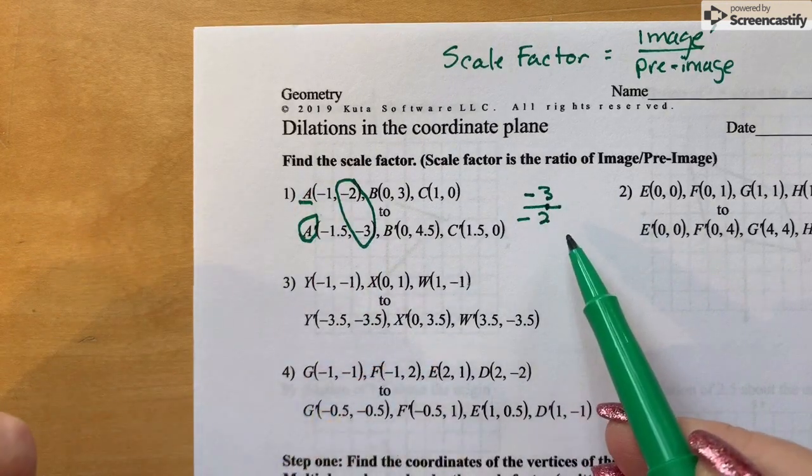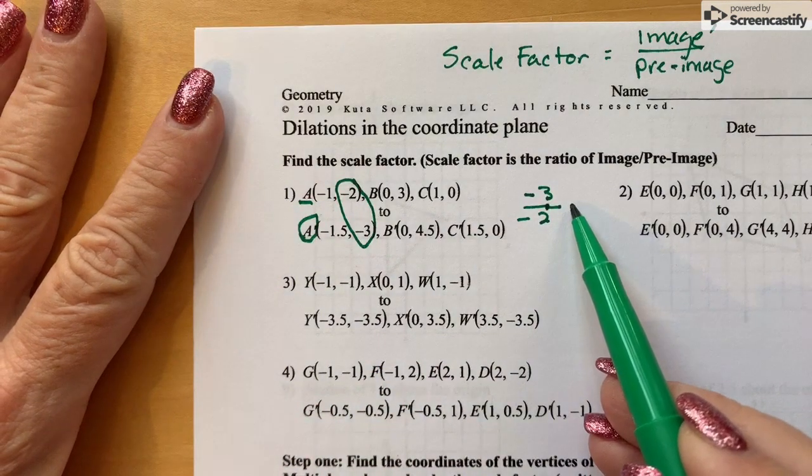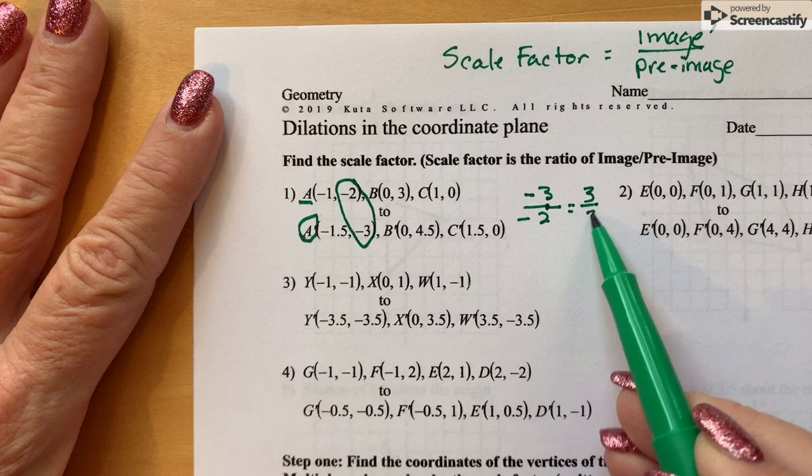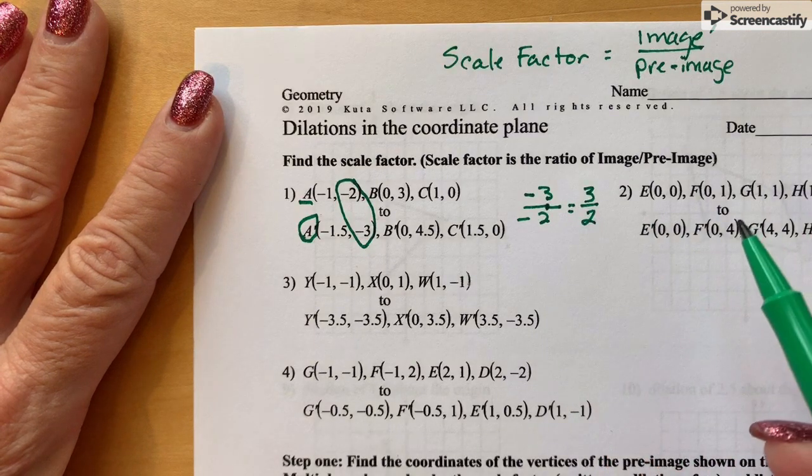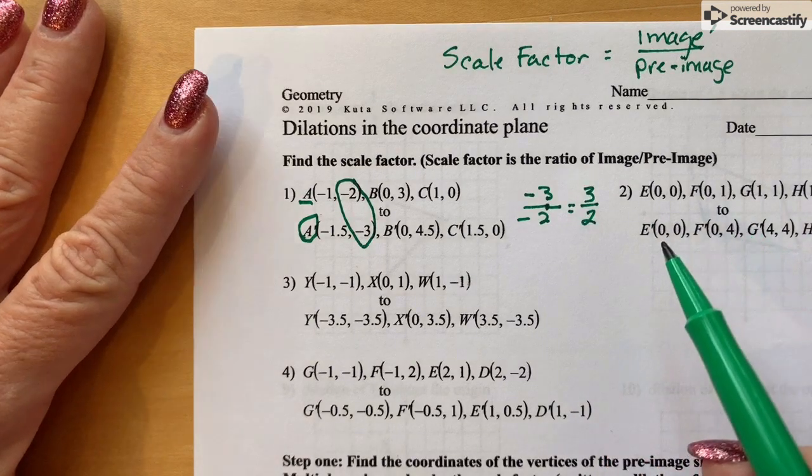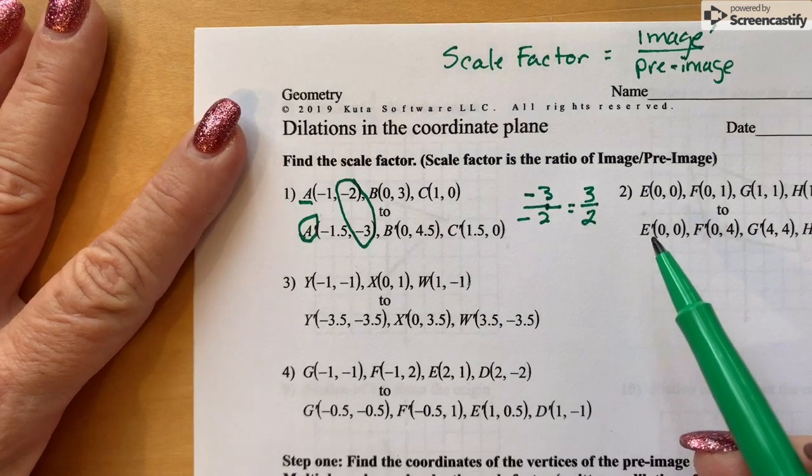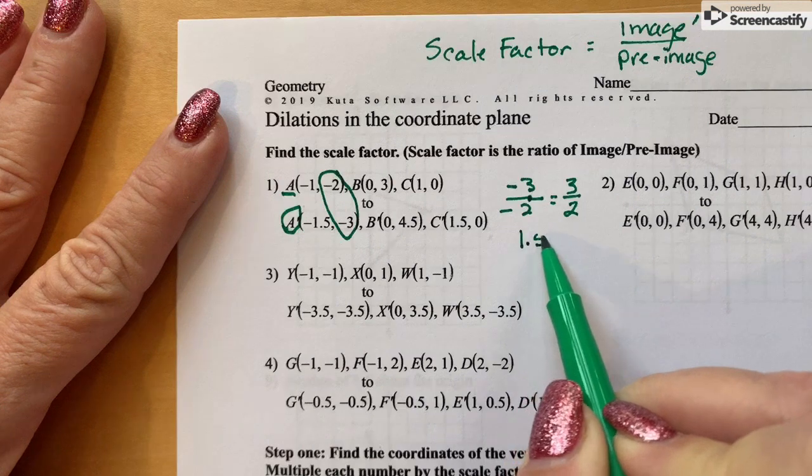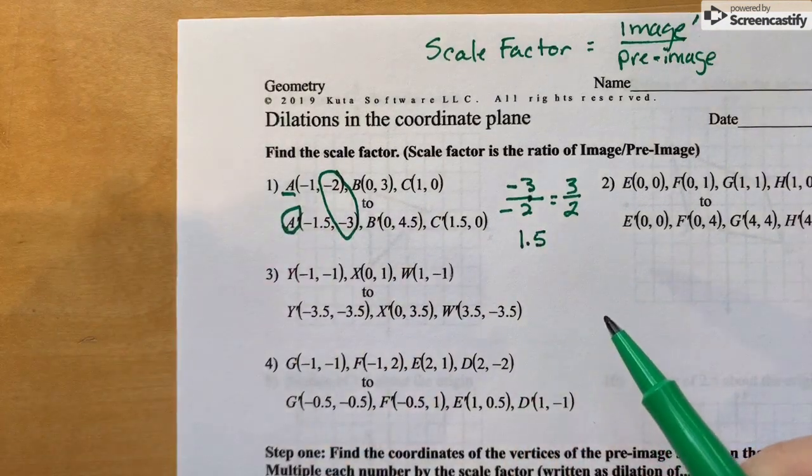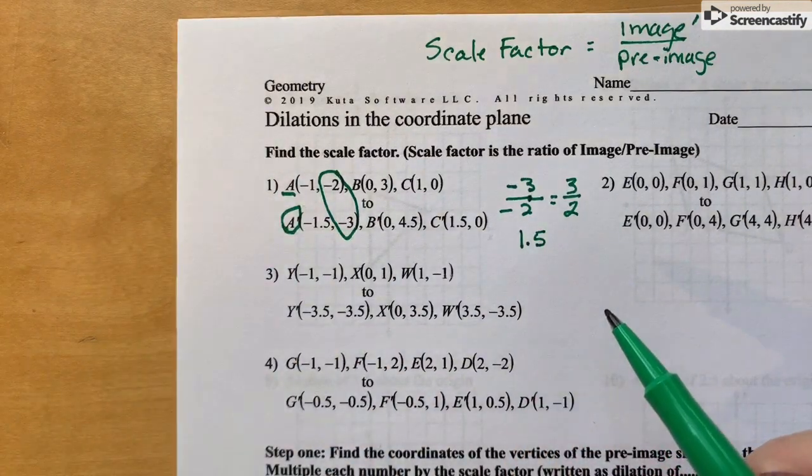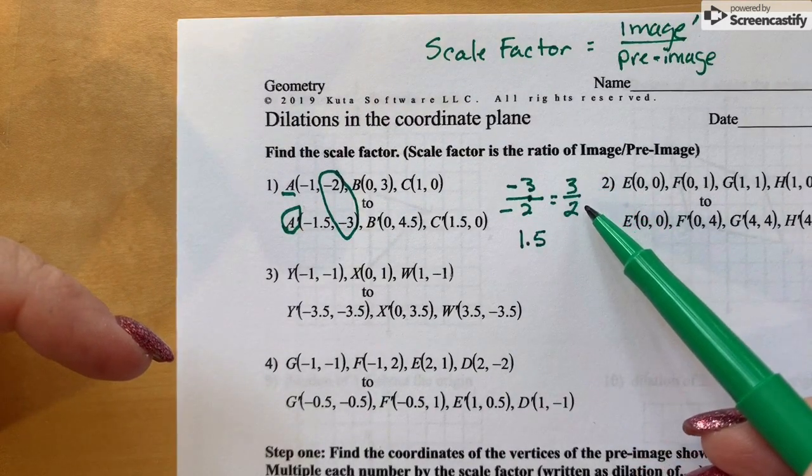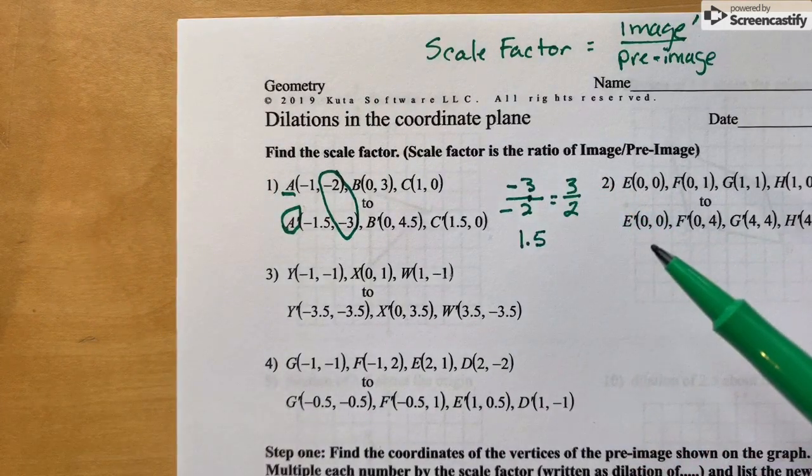Because they are both negative, that does reduce to positive 3 halves, and then we can also write it as a decimal which you do need to do for the Go Formative, which is writing it as 1.5. Now if you don't know the decimal by creating the fraction, then you can just put 3 into your calculator and divide by 2 because fractions mean divide.